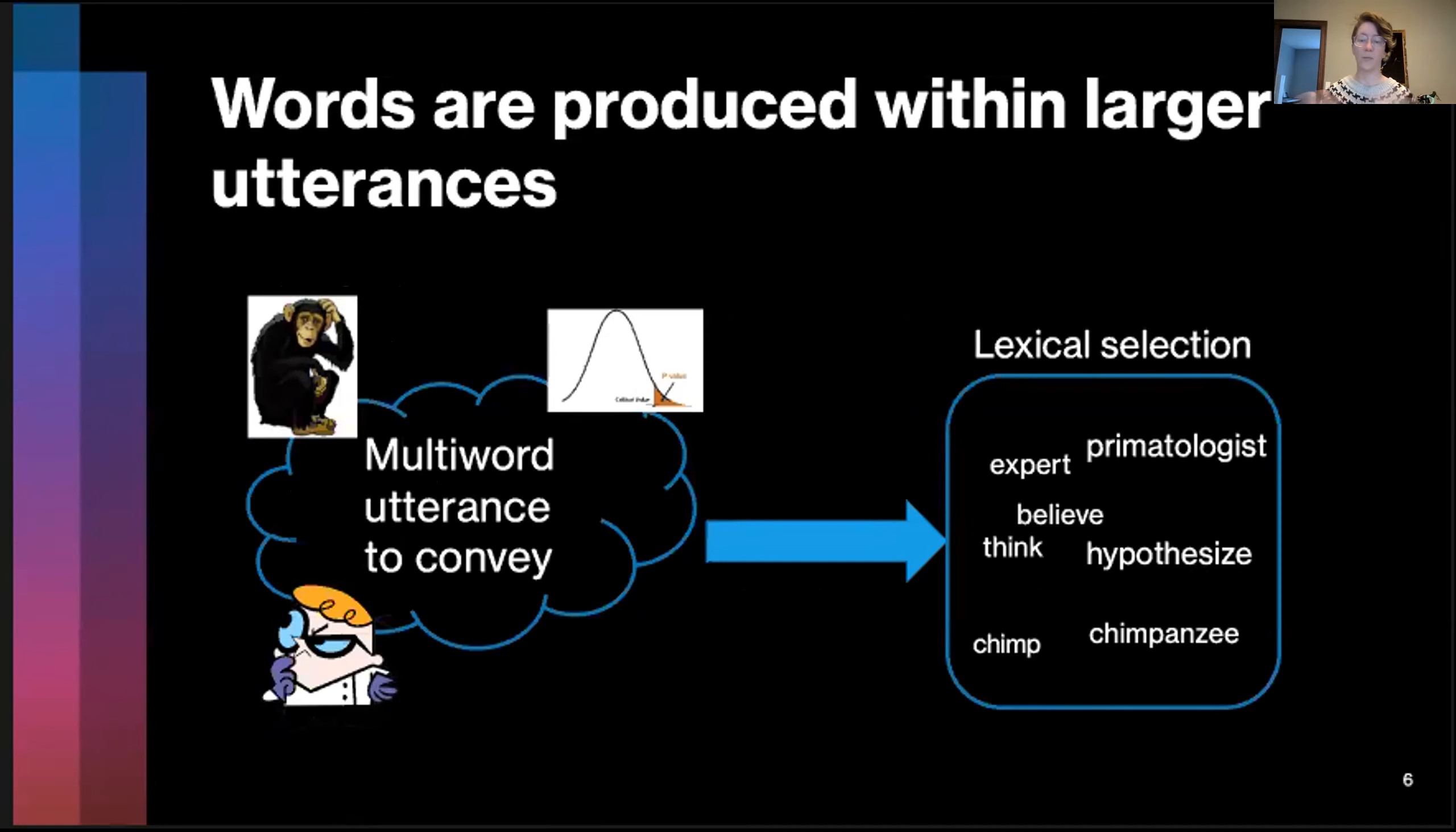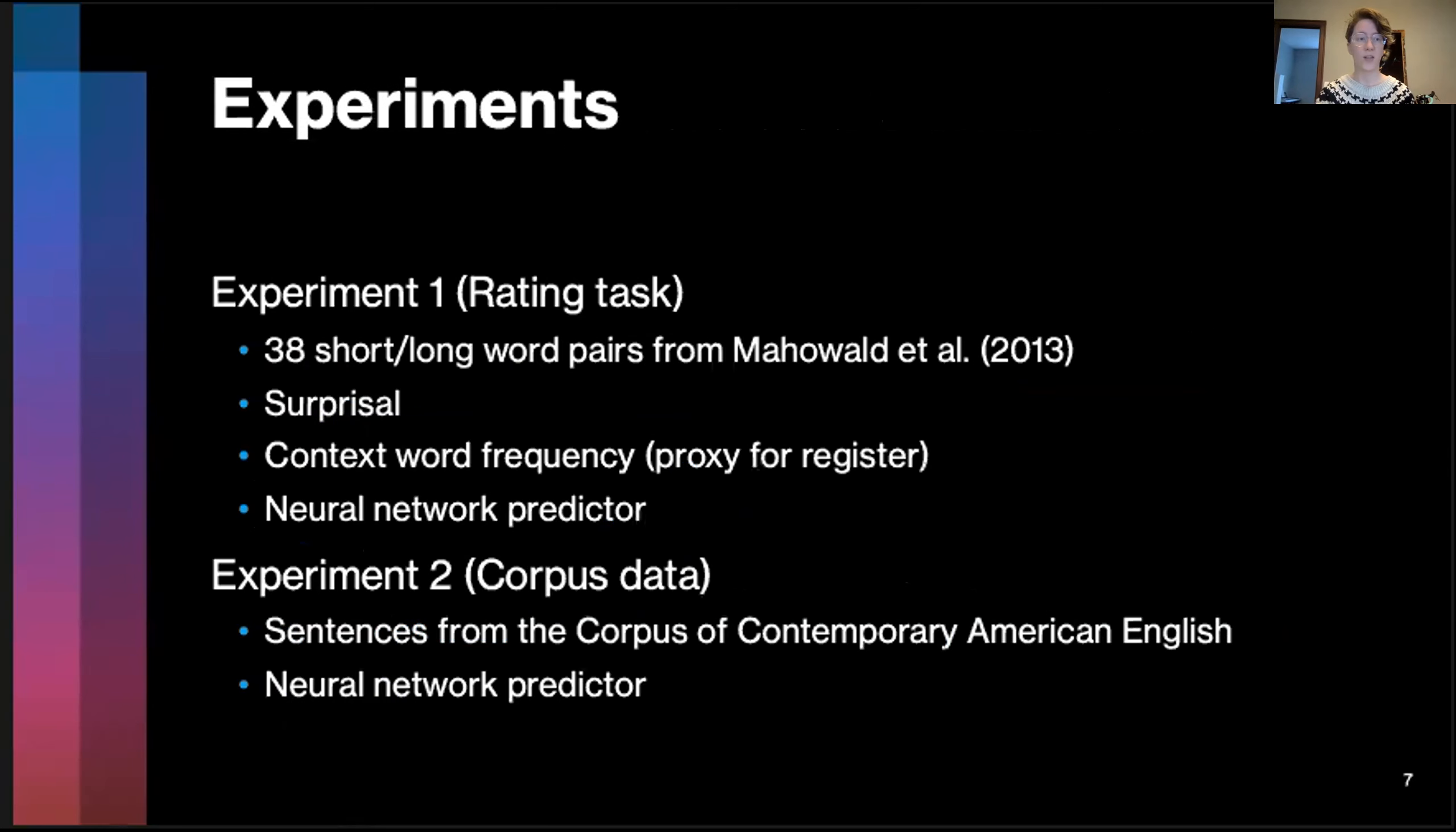We should be able to predict the choices of speakers' words from the properties of the surrounding words they are also going to be processing. To look at this, we conducted two experiments. One is a rating-based task that we conducted on Qualtrics, and another is a corpus study where we attempted to transfer all of our findings from the rating task of our participants to real-world sentences. We're going to be looking at choices of short and long words like chimp and chimpanzee that we took from the Mawald et al. study. We're going to be comparing these short-term surprisal effects to broader effects of the frequencies of the words in the context as a proxy for register or formality.